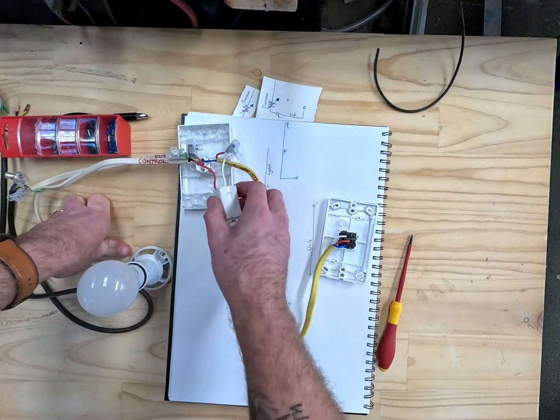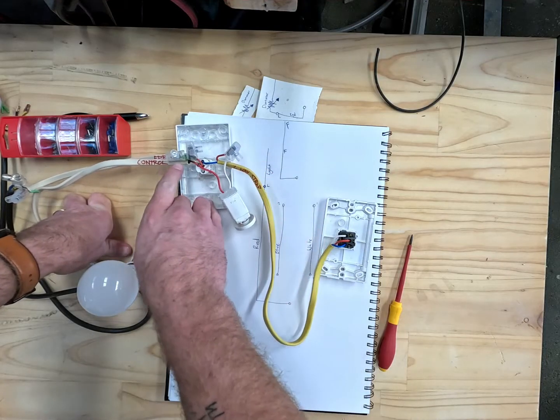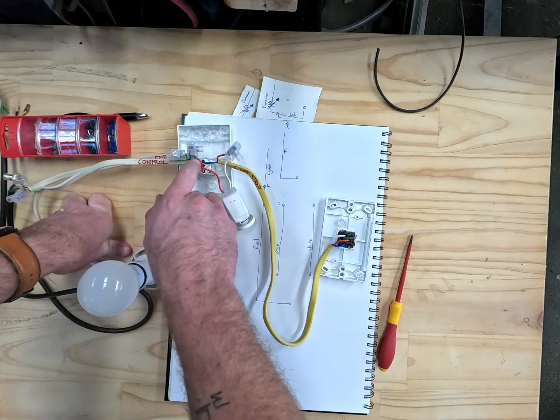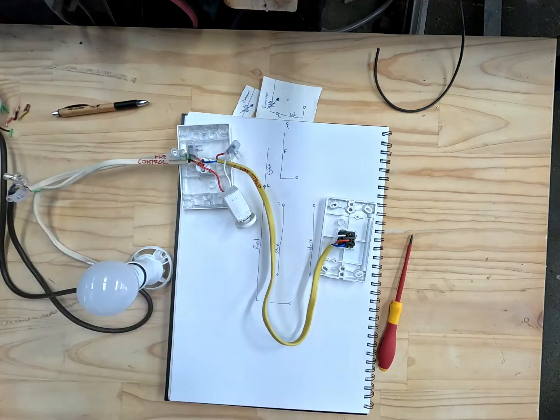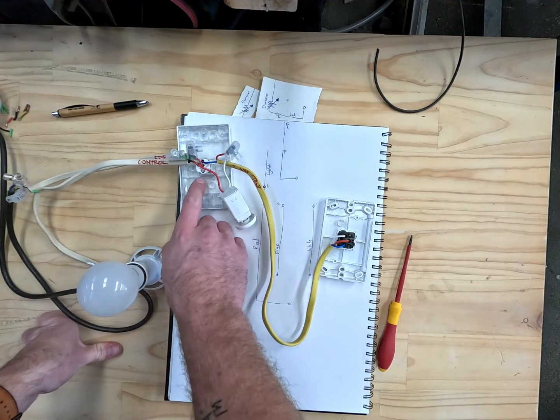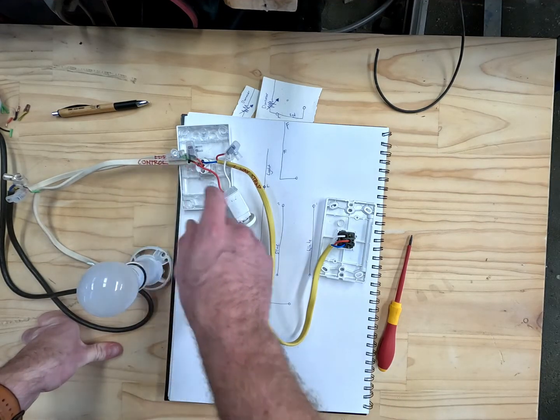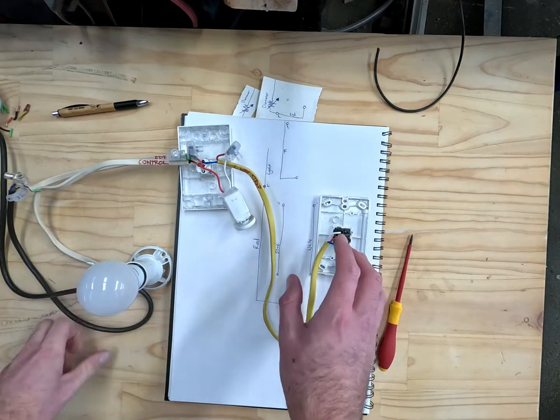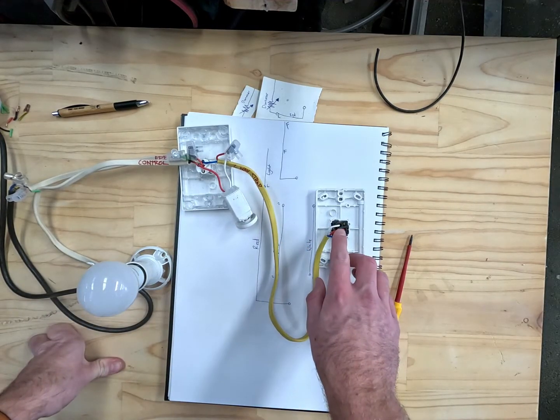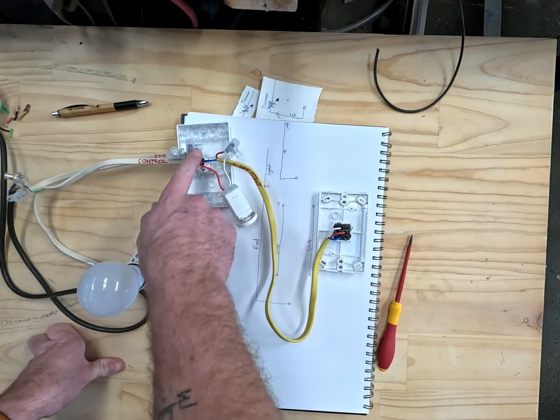So there is one other place you can put this dimmer and that is direct on the feed into the light switch. I wouldn't suggest doing that because then it means that if you turn the light switch off, your dimmer will always be live. So it's far more preferable to have it at the switch here like I showed you or at the switch here.